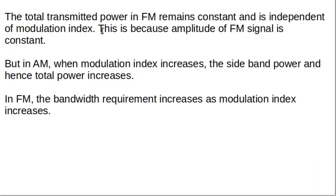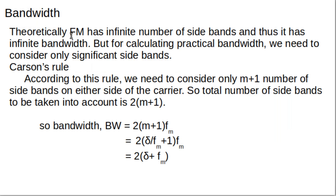An important characteristic of FM is that total transmitter power remains constant and is independent of modulation index, because the amplitude of the FM signal is constant — there is no variation in amplitude. In AM, when modulation index increases, side band power and total transmitted power increase. But in FM, total transmitted power is independent of modulation index, though bandwidth requirement increases as modulation index increases.